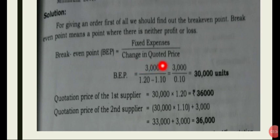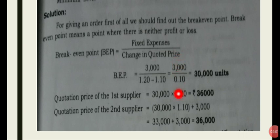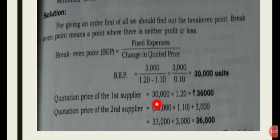Break-even point is equal to fixed expenses divided by the change in cost price. Fixed expenses divided by change in cost price. Break-even point: fixed expenses divided by, upon 1.20 minus — for the first quotation the price is 1.20, and for the second quotation the price is 1.10. So 1.20 minus 1.10 equals 0.10. Divided by that, it comes to 35 units. For the first supplier, 1.20 minus cost gives us the break-even. For the second supplier's case, we evaluate similarly.